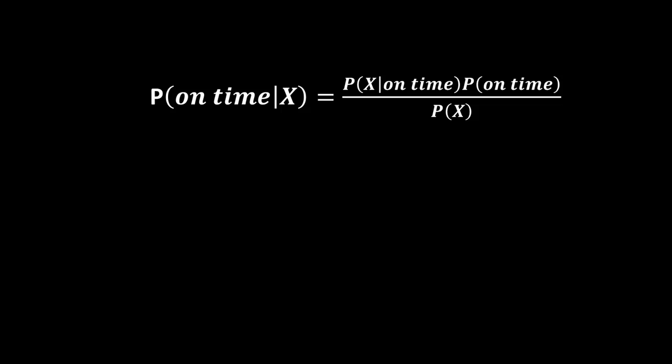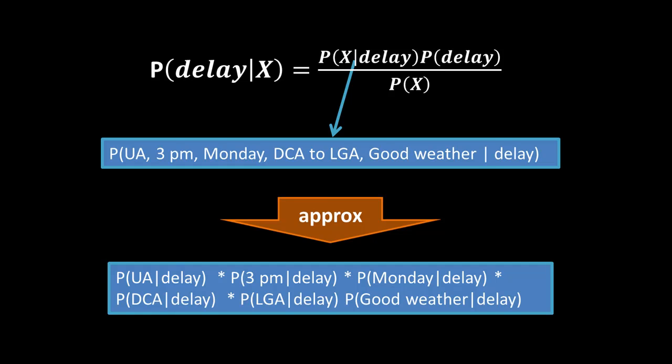We approximate by saying the numerator is probability of UA given delay multiplied by probability of 3pm given delay, etc. — we break out the whole expression X given delay into its components, each given delay, and multiply all those probabilities. That's the naive approximation. Similarly, we calculate probability of on time given X. We said we will calculate both probabilities and classify a case as the one with higher probability. For example, suppose probability of delay is 0.6 and probability of on time is 0.4 — we say it's going to be delayed because that has the higher probability. We approximated the numerator; each individual case like probability of UA given delay or probability of 3pm given delay has lots of records. But what about probability of X in the denominator? We are still stymied with that.